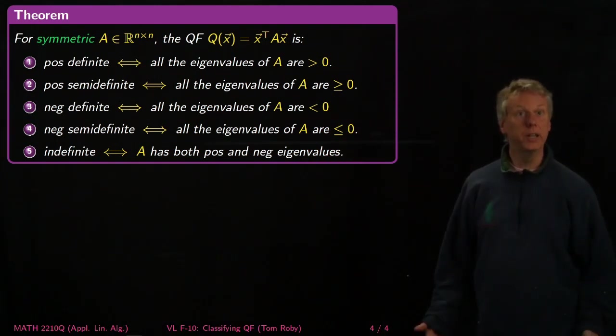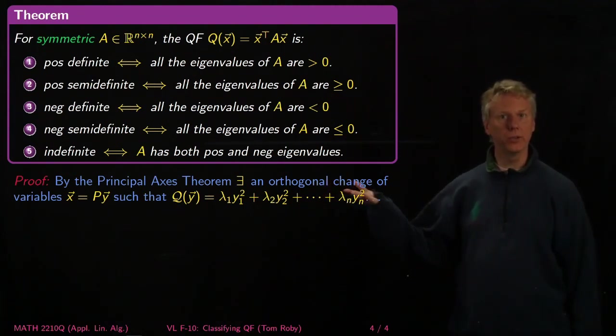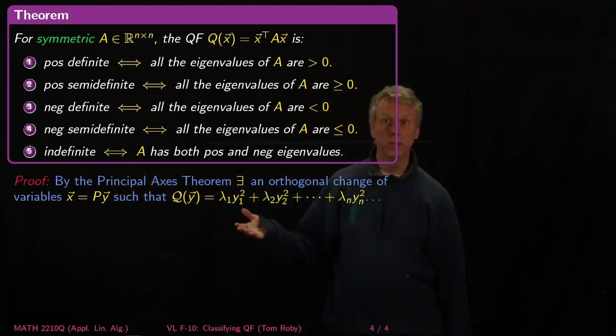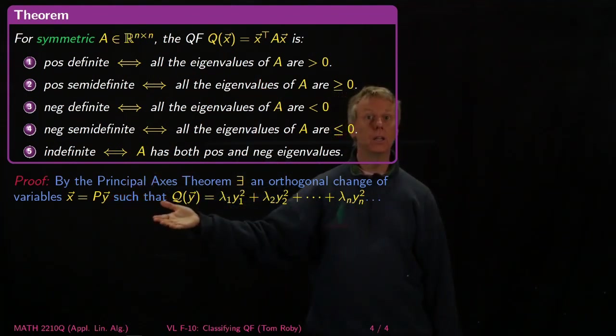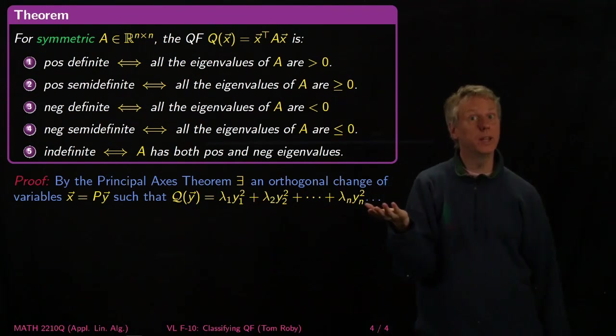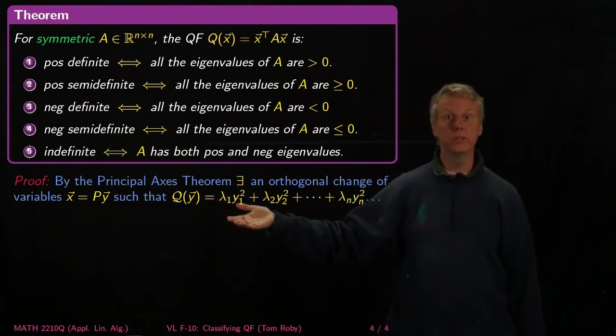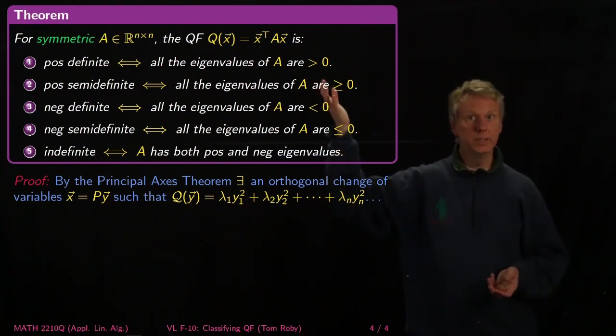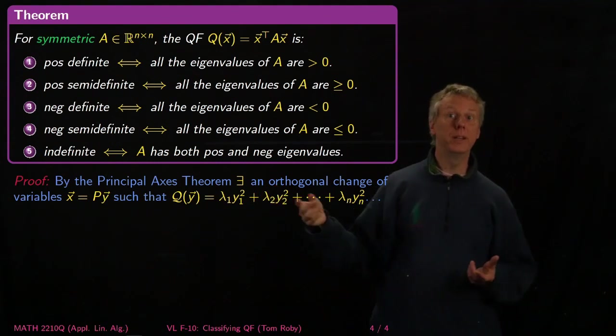And it's indefinite if it has both positive and negative eigenvalues. The point is that this classification is not hard to deal with in practice. All you have to do is use the principal axes theorem, which says we can find an orthogonal change of variables. Instead of thinking with x glasses, we think with y glasses. With respect to that change of variables, we can always diagonalize the matrix A.